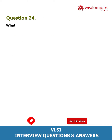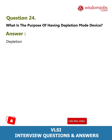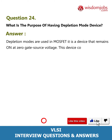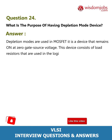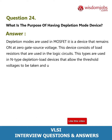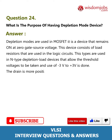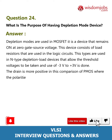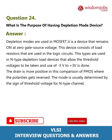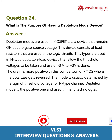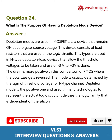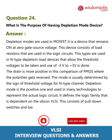Question 24: What is the purpose of having a depletion mode device? Depletion modes are used in MOSFETs. It is a device that remains on at zero gate-source voltage. This device consists of load resistors used in logic circuits. These types are used in N-type depletion load devices that allow threshold voltages to be taken, using minus 3V to plus 3V. The mode is usually determined by the sign of threshold voltage; for N-type channel, depletion mode is the positive one. It defines the logic family dependent on silicon VLSI, consisting of pull-down switches and loads for pull-ups.